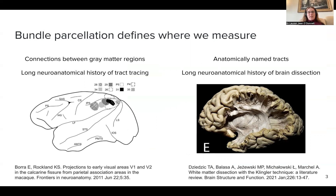The bundle definition based on connections between pairs of gray matter regions is inspired by a long neuroanatomical history of tract tracing experiments. These are invasive experiments where a tract tracer is injected into usually the cortex of a non-human primate, such as a macaque brain. You can see in the lower left image several regions of the cortex where tracer was injected. The other type of bundle parcellation deals with anatomically named tracts or major bundles, relating to a long neuroanatomical history of dissection of brains — for example, the arcuate fasciculus and the uncinate fasciculus fiber tracts.